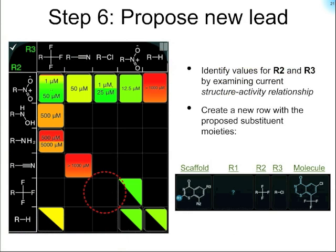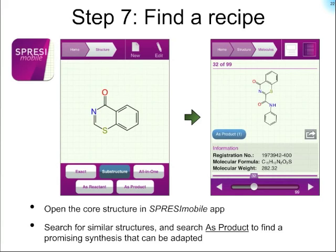If we want to go a little further out on a limb, we could pick a matrix square that doesn't have any representation at all — venturing into the world of compounds that may not be known. Looking at the one circled in red dots, it corresponds to R3 equals chloro, which has some known positive data associated with it, and R2 equals trifluoromethane, which was predicted to be good. This gives us a partially functionalized molecule possibility, leaving the R1 fragment open to interpretation.